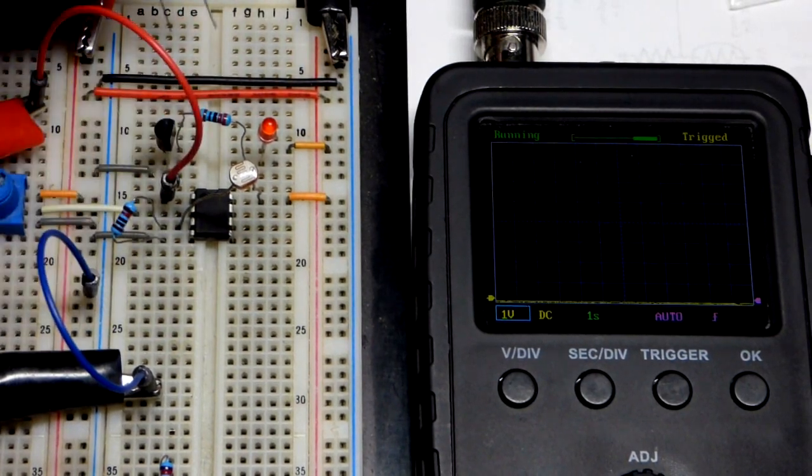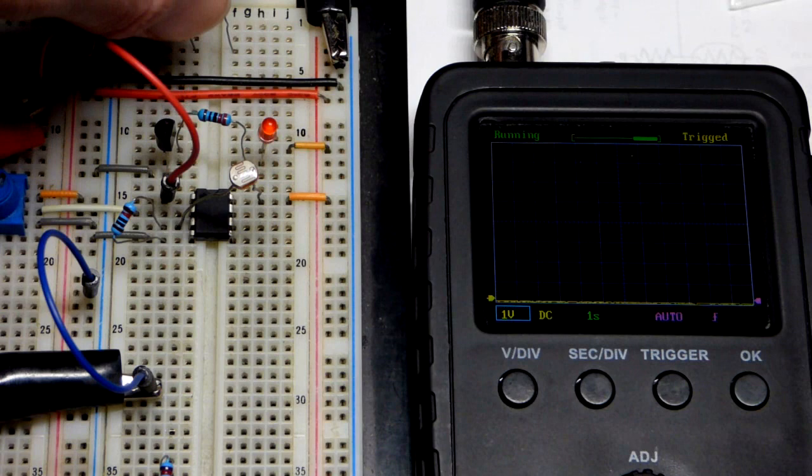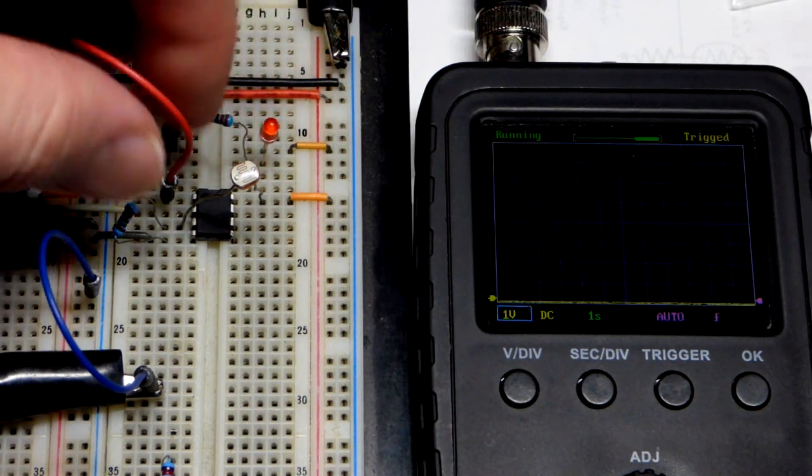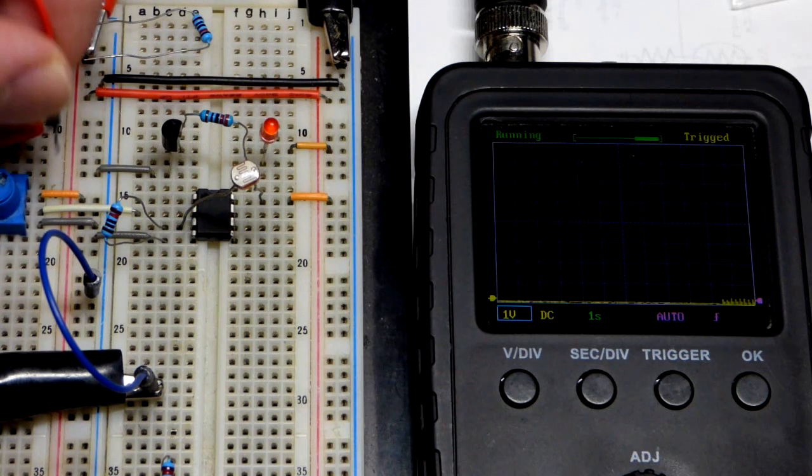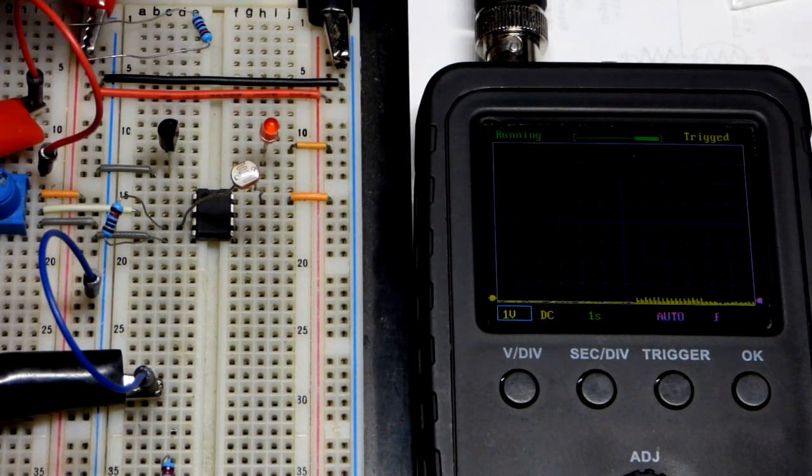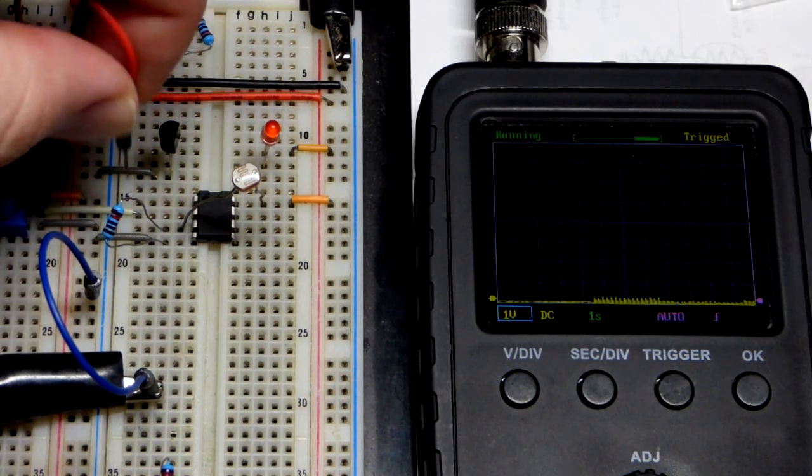I'm going to remove this 10k resistor, so we just got rid of this connection to the op amp altogether, and I'll move this jumper. What we're going to do is take the resistor—actually I'm going to put the jumper back for the oscilloscope right there.